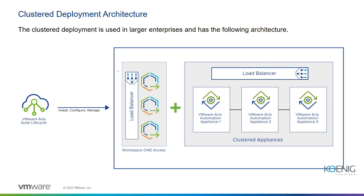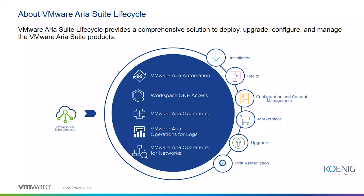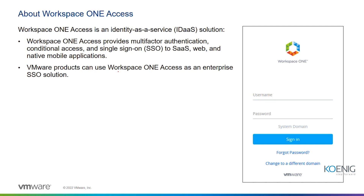ARIA Suite Lifecycle provides a solution to deploy, upgrade, configure, and manage ARIA suite products including Automation, Workspace ONE, ARIA Operations, Operations for Logs, and Networks — all managed through a single ARIA Automation Lifecycle. Workspace ONE Access is an Identity-as-a-Service platform that replaces VMware Identity Manager. It provides multi-factor authentication, conditional access, and single sign-on to SaaS. Workspace ONE Access can also be installed from ARIA Suite Lifecycle.